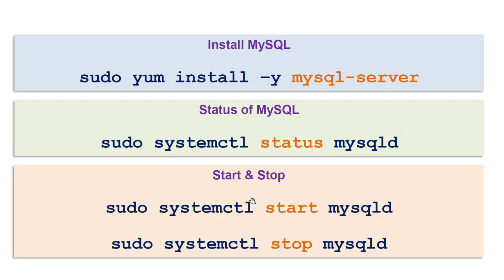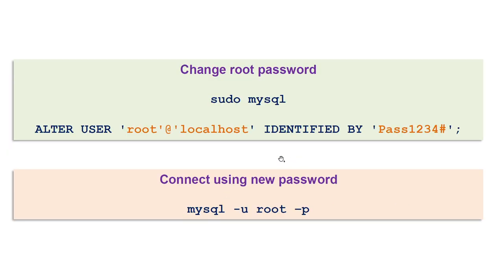Once we have installed and started MySQL, let's see how to change the root password. The first time, the password assigned to MySQL is a temporary password and we need to change it. To do that we will use the sudo mysql command to connect, then use ALTER USER root@localhost IDENTIFIED BY and provide a complex password — I'm using pass1234# here, though you should choose a genuinely complex password.